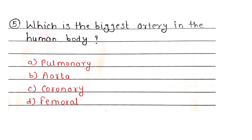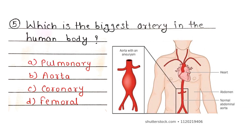Fifth question: Which is the biggest artery in the human body? Correct answer, Option B, Aorta. Aorta manjej maha dhamni hi apla shariratil sarvat moti dhamni haste.